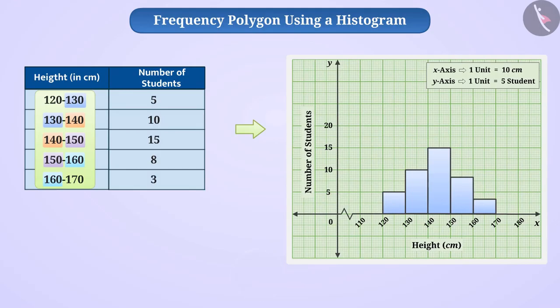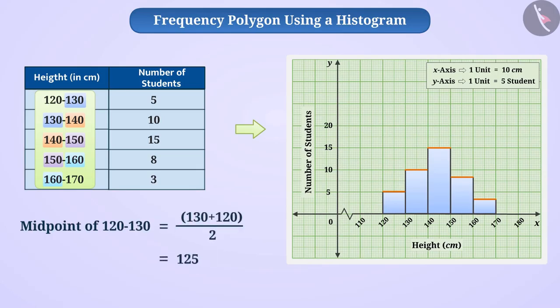To make a frequency polygon, first we need to find the midpoint of the upper side of each rectangle. The midpoint of class interval 120 to 130 will be 125. Therefore, we go to the upper side of the rectangle drawn on the class interval 120 to 130 and mark the middle point, followed by the vertical line representing 125 on the x-axis. 125 is the midpoint of class interval 120 to 130 — we also call it a class mark.